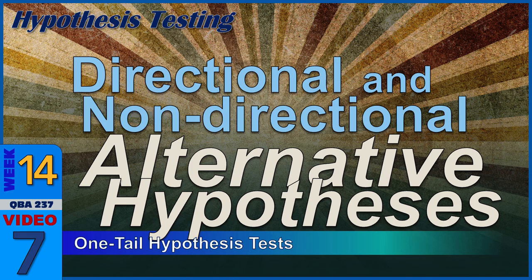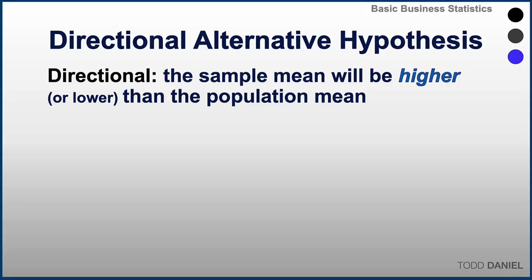When we have an alternative hypothesis, we should also consider the direction of change, the directionality of the alternative hypothesis. A directional alternative hypothesis specifies that a sample mean will be higher than the population mean, or perhaps that the sample mean will be lower than the population mean.